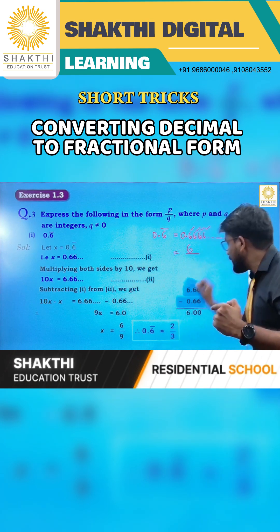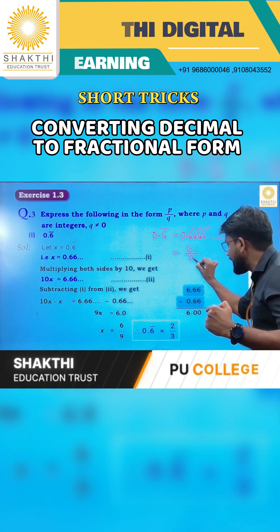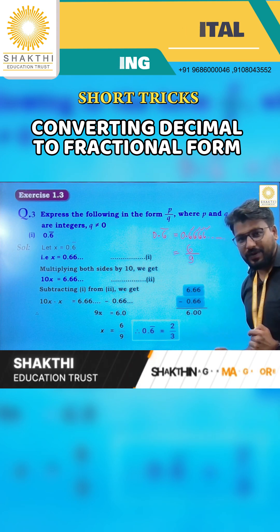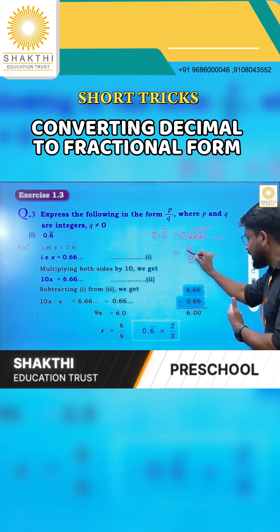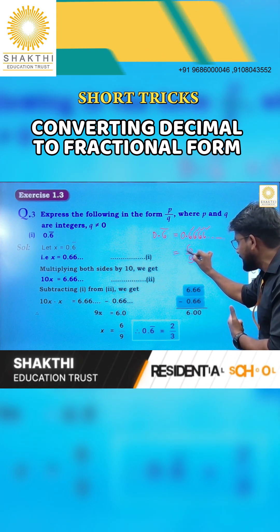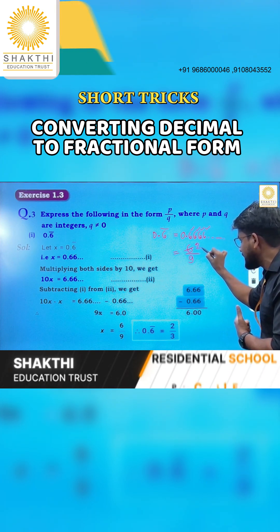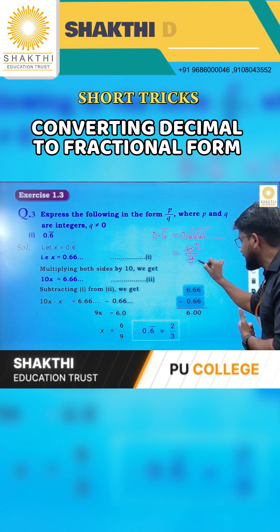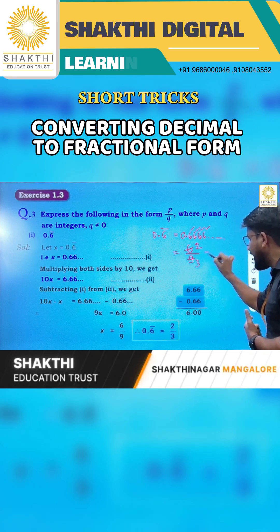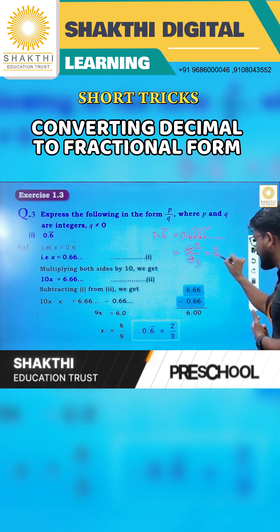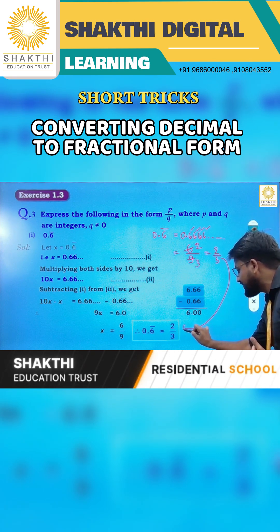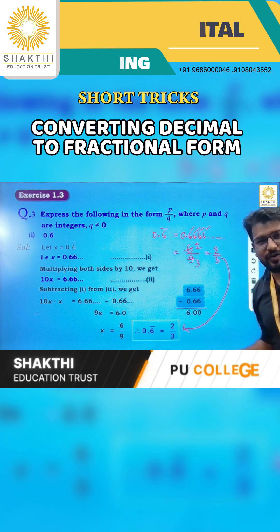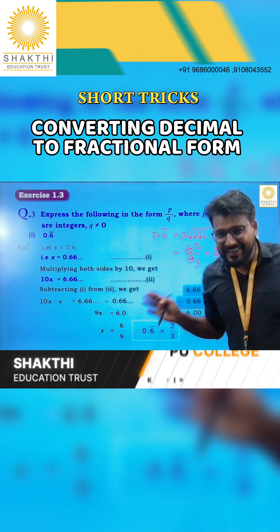And in the denominator, since only one digit is repeating, you write 9. Then if you cancel — 3 twos are 6, 3 threes are 9 — the answer is 2 by 3. You can see the answer here also is 2 by 3. Isn't it great?